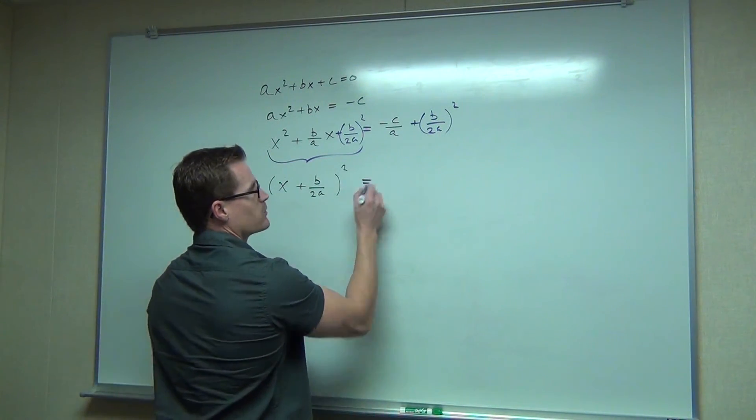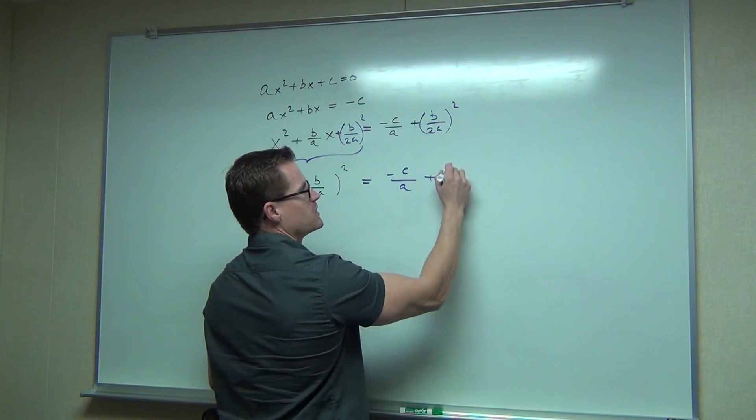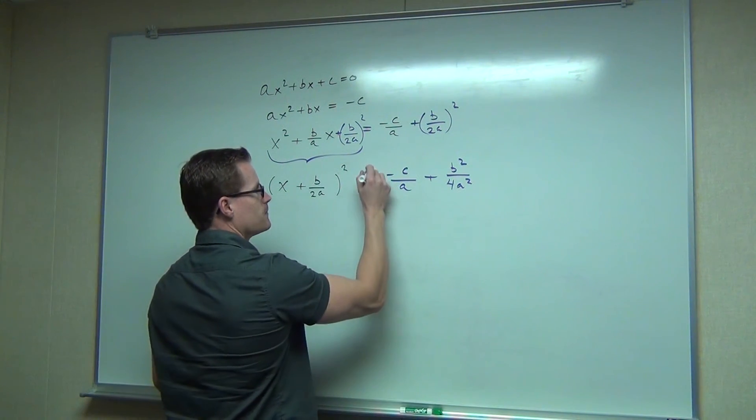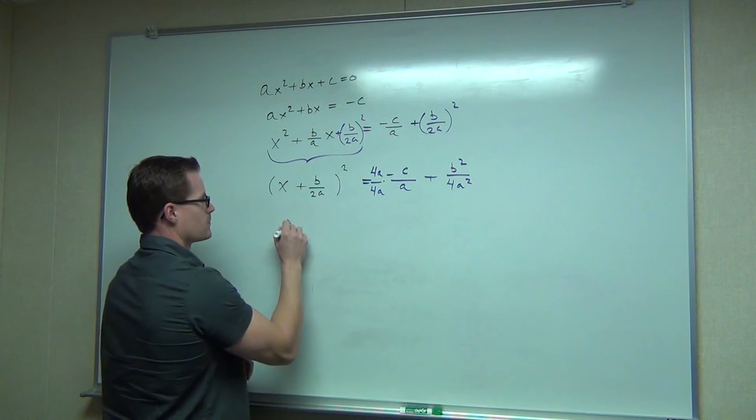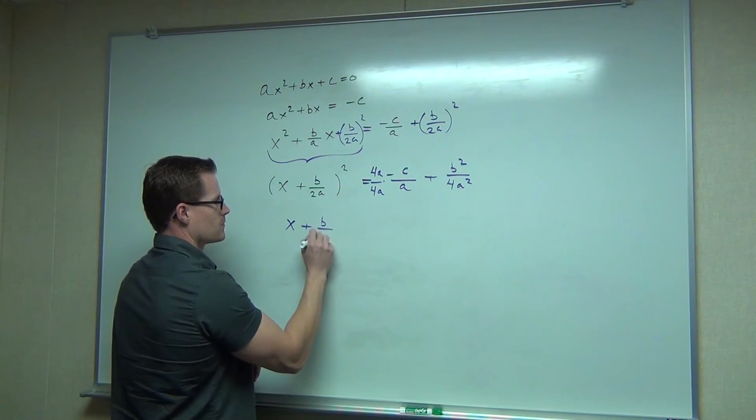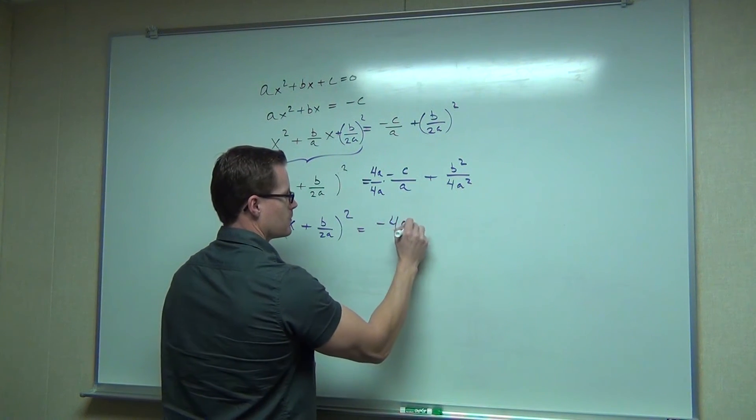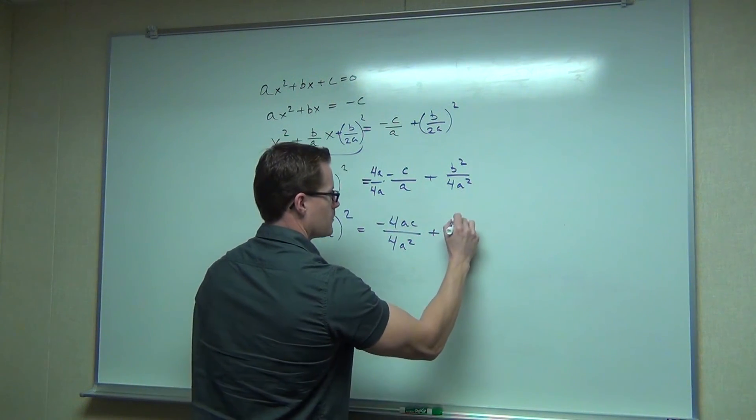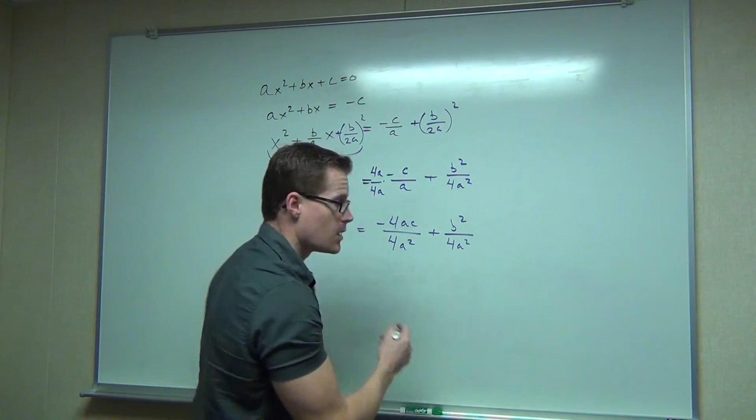This looks ridiculous to factor if you're not used to factoring. Using that special step that we do, do it at the same time, it's very easy to factor. This is this. On the right-hand side, we'll do some fancy math. We'll do negative c over a plus b squared over 4a squared. We'll find a common denominator. We'll make one fraction out of that now that we do have a common denominator.